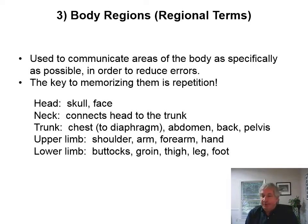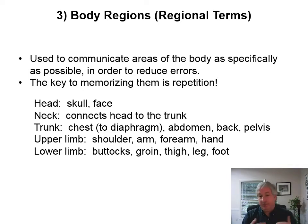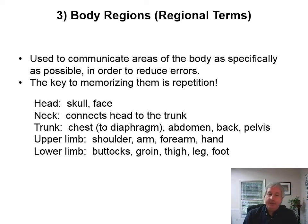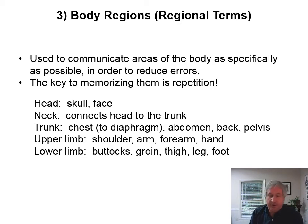If you try to cram two hours before the test, you're going to have a tough time. The head has the skull and the face. The neck connects the head to the trunk. The trunk is the chest down to the diaphragm, which goes up and down to help you breathe. You have the abdomen or abdominal area, the back and the pelvis. Then you have the upper limbs — the shoulder, the arm, the forearm and hand — and the lower limb — the buttocks, groin, thigh, leg, and foot. So those are the basic things, but there are a whole lot more terms that describe sub-regions of those.